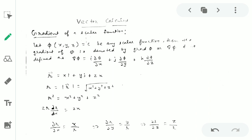First of all, let me just make a quick review of the vector calculus. Gradient of a scalar function: let us suppose we have a function φ(x,y,z) which is a scalar function. Then the gradient of φ is denoted by grad φ or del φ, and it is defined as del φ = i(∂φ/∂x) + j(∂φ/∂y) + k(∂φ/∂z).